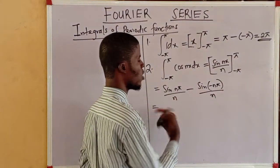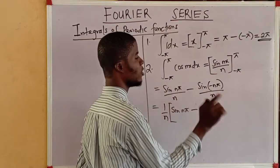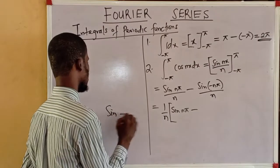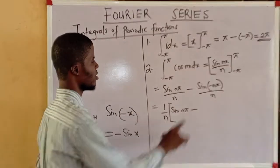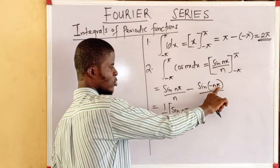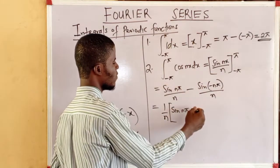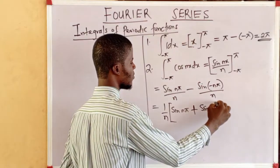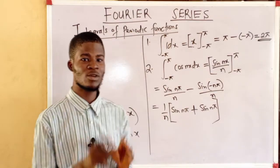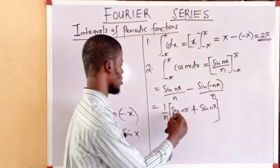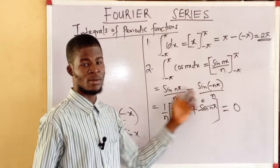1 over n is common; bring it out. We have (1/n) times [sine(nπ) minus sine(−nπ)]. Trigonometry says sine(−x) = −sine(x), so sine(−nπ) = −sine(nπ). The minus outside gives us plus, so we have sine(nπ) + sine(nπ). But sine(nπ) is always zero for all n, whether positive or negative. So everything here gives us zero.